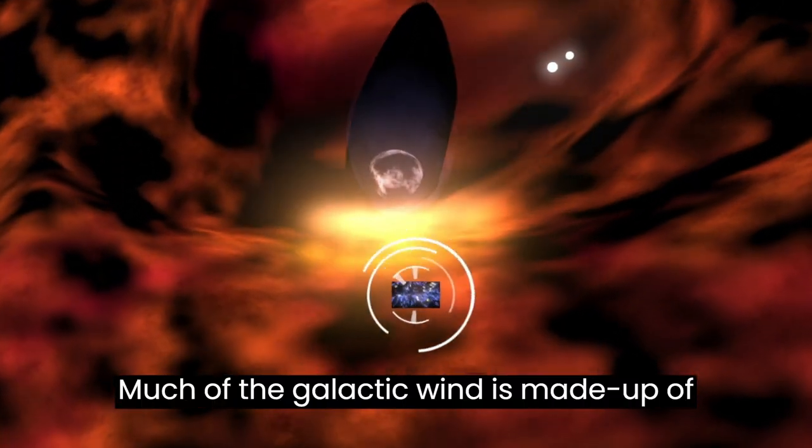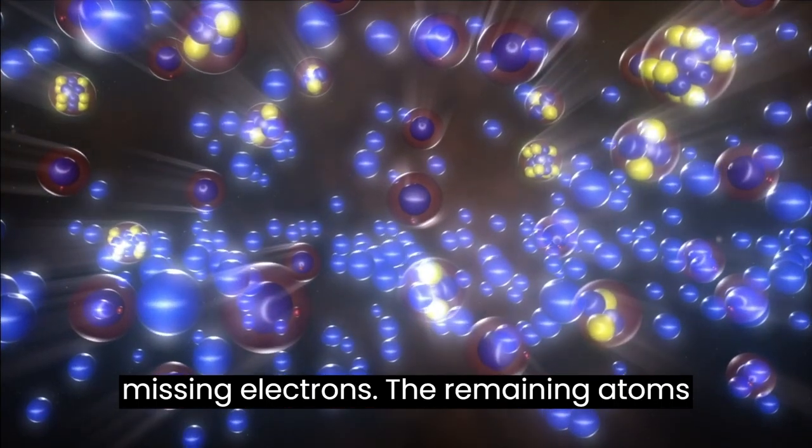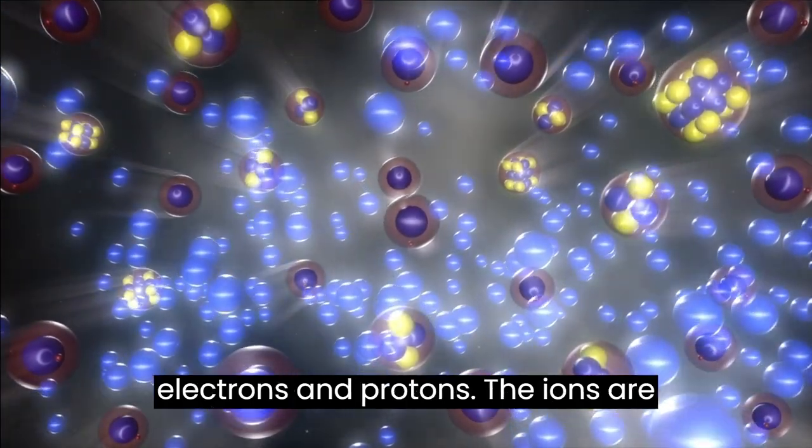Much of the galactic wind is made up of ions, which are atoms with charge due to missing electrons. The remaining atoms are neutral. They have the same number of electrons and protons.